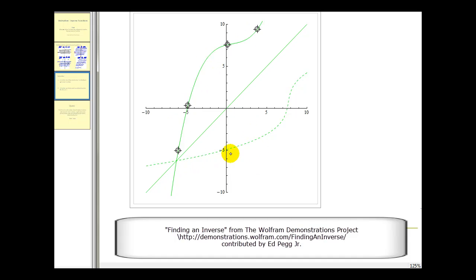So if the original function is not one-to-one, the inverse will not be an inverse function. Let's show that again. If the original curve is not one-to-one because it fails the horizontal line test—the horizontal line would intersect this graph in three points—then the resulting inverse would fail the vertical line test, as we see here.